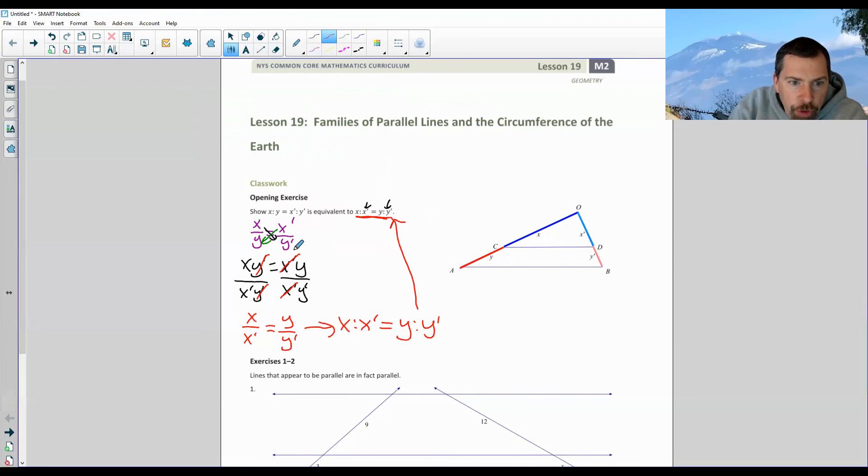Well, that is the same as saying x is to x prime as y is to y prime, which is this. So we just showed that just by setting these up as fractions, cross multiplying, dividing by x prime y prime, the other items cancel and it shows that they are equivalent.